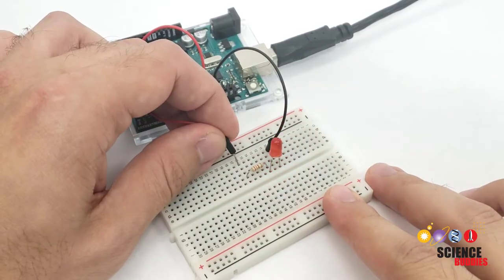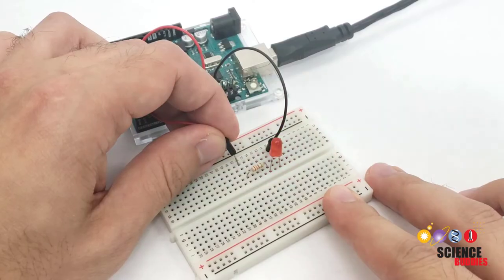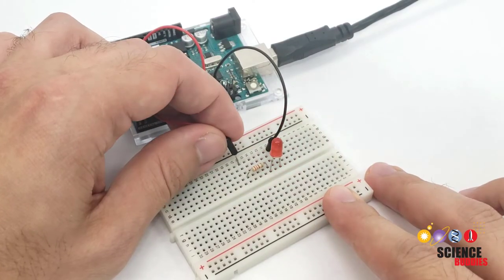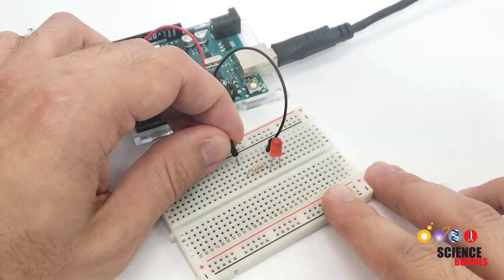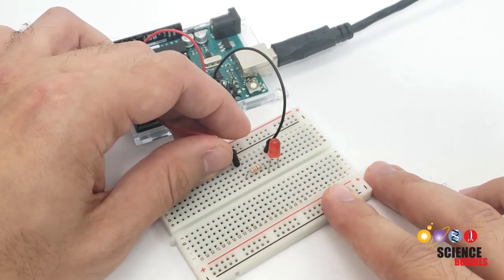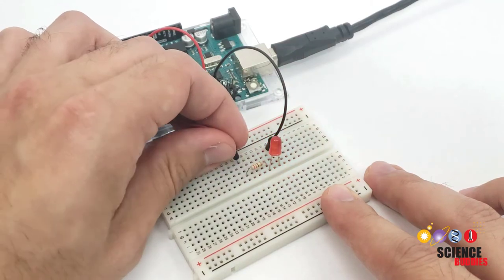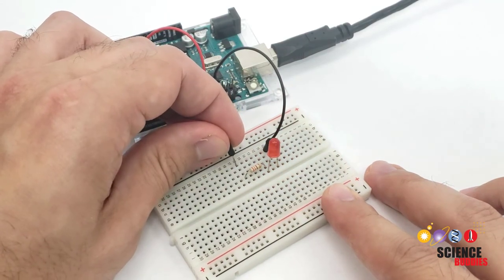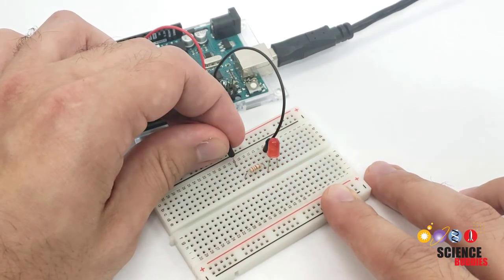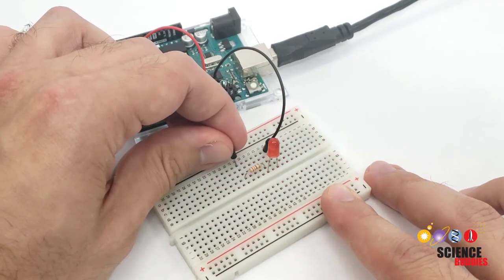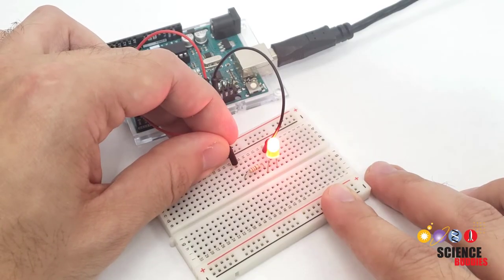If your circuit seems to work sometimes, but not all of the time, then keep an eye out for loose connections. If you have a wire, resistor, or LED that's not firmly pressed all the way into the breadboard, this will result in an intermittent electrical connection, so your circuit might work inconsistently. Make sure everything is pressed firmly all the way into the breadboard.